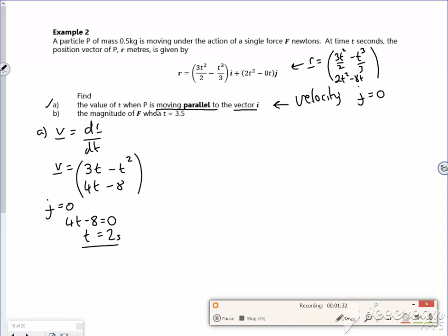Then it says, find the magnitude of the force when t is 3.5. So if you remember all the forces stuff we did was f equals ma. And you know from school that a force is a vector and acceleration is a vector. So why can't I just use f equals ma with vectors then? Because we've only done it in one direction and we can do it in more than one direction. So I need my acceleration then.